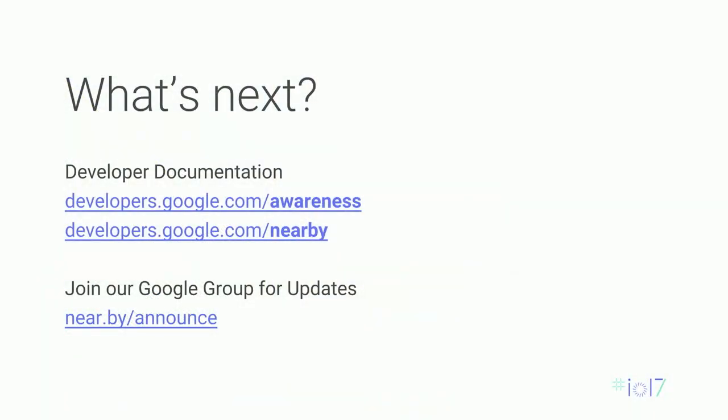The Nearby Connections API will be available in a couple of weeks in a new version of Google Play Services, and we're really excited to see what you're all going to build with it. Please keep giving us feedback about the kinds of things you'd like us to do with Nearby. There's a wealth of information on our developer site about all of our APIs — Awareness and Nearby — including examples, sample apps, and reference implementations. Please join our mailing list for updates when the APIs are available. Thank you all for coming.